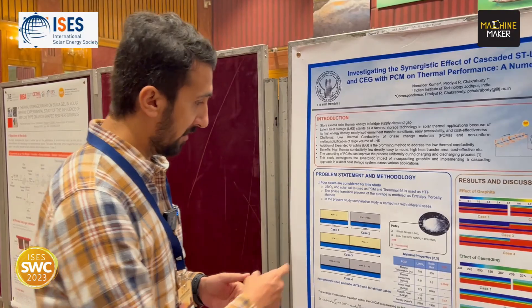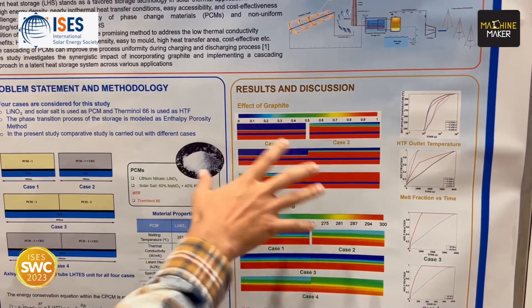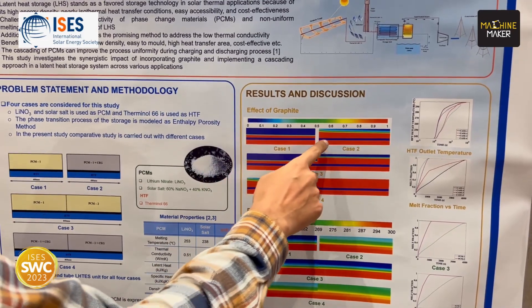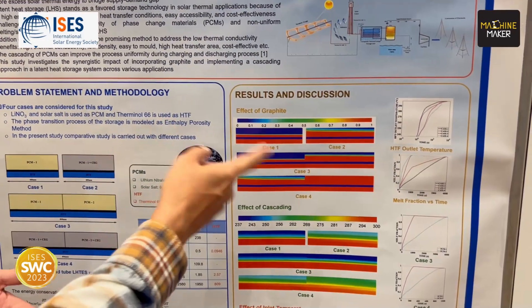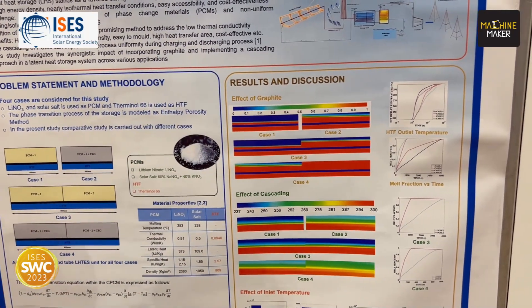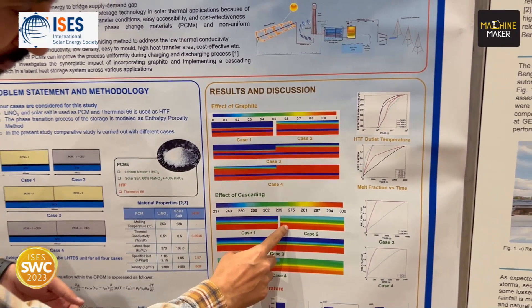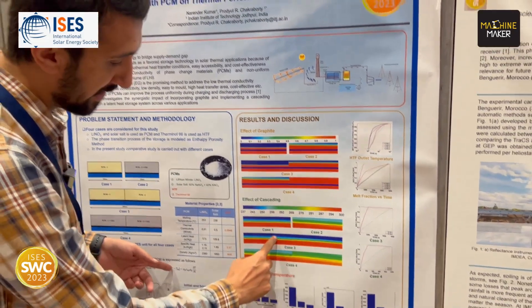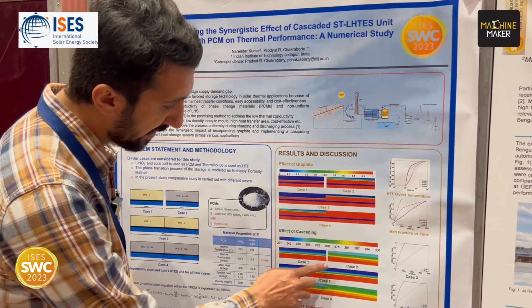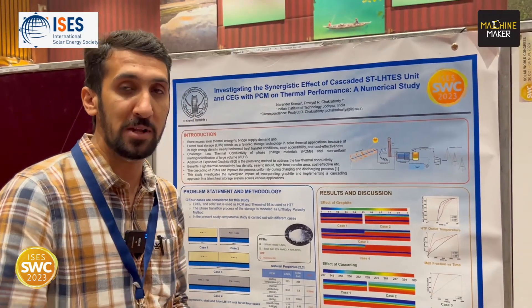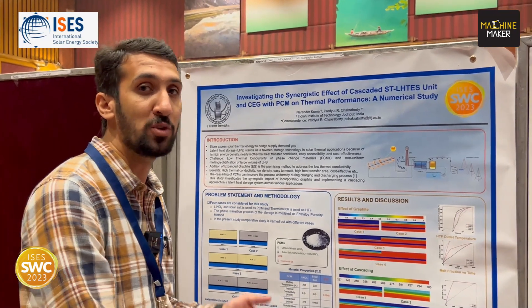We found that when using CEG combined with the phase change material, the heat transfer rate is much higher, resulting in faster charging of the phase change material. When we look at the cascading system, we found temperature variations with the addition of the cascaded system, and there is a higher driving potential between the heat transfer medium and the phase change material due to the cascading effect.